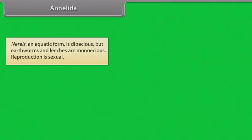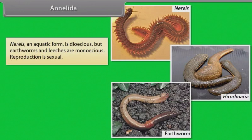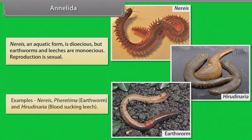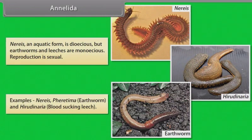Aquatic forms are dioecious, but earthworms and leeches are monoecious. Reproduction is sexual. Examples: Pheretima, that is earthworm, and Hirudinaria, that is blood-sucking leech.